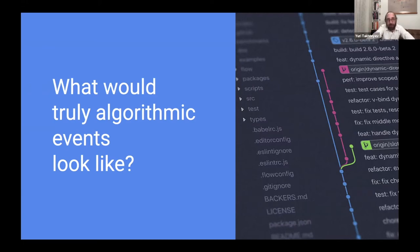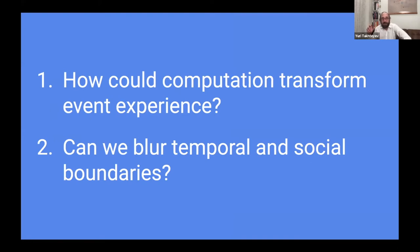To make it slightly more concrete, I wanted to break this down into two questions. One is, how could computation transform event experience? If you are in the event, if technology was used beyond just bringing you into it, but rather there was computation happening while you're in it, the most obvious example is you could have algorithms suggesting who you should be talking to or which groups you need to be a part of, but what else could we do? The second one is, can we blur, how can we blur temporal and social boundaries around events? Because traditional face-to-face events, they have a beginning and they have an end, and they also have participants and non-participants.